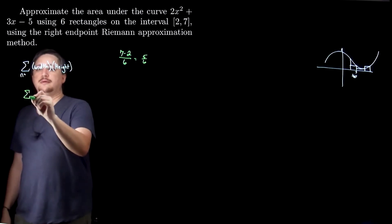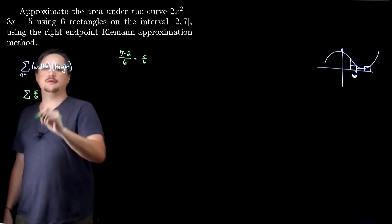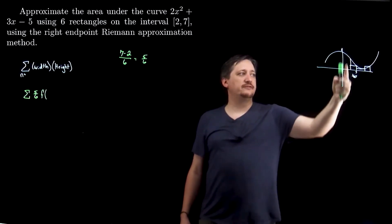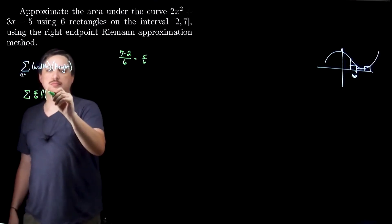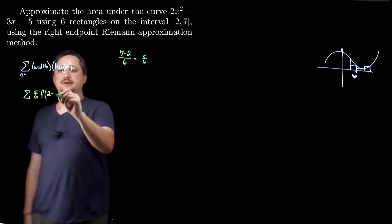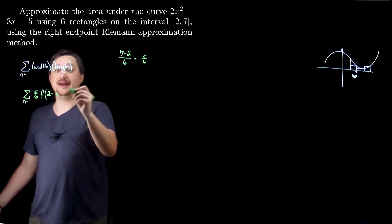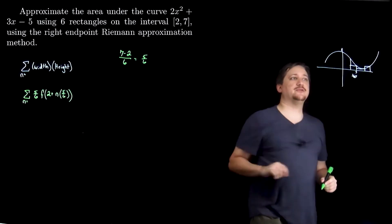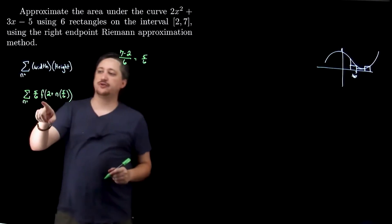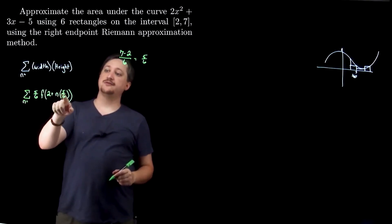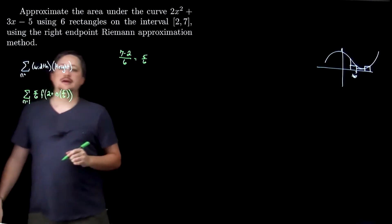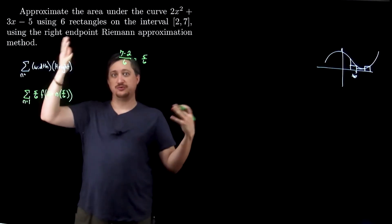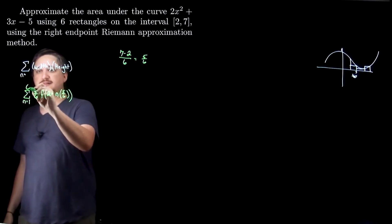So I'm going to have the sum; my width is 5 sixths, and then my height is always this f of something. I'm going to start with the starting value of the interval — which is 2 — then move however many widths over I need. So I'm going to have 2 plus n times 5 sixths. According to my cartoon, my first height needs to be one width over, so that means my first rectangle's height needs to be 2 plus 1 times 5 sixths — so n starts at 1. And if I'm adding six things together going from 1 to 6, that's six things. So it's going to be 6 up here.